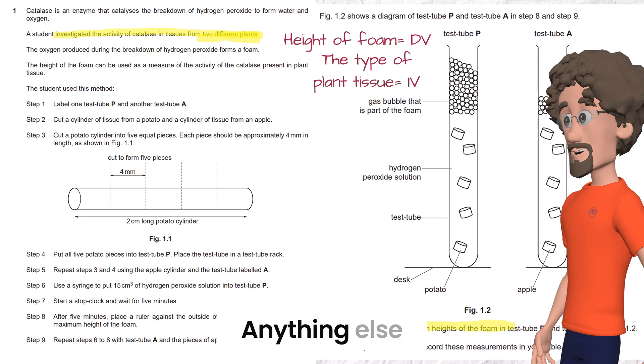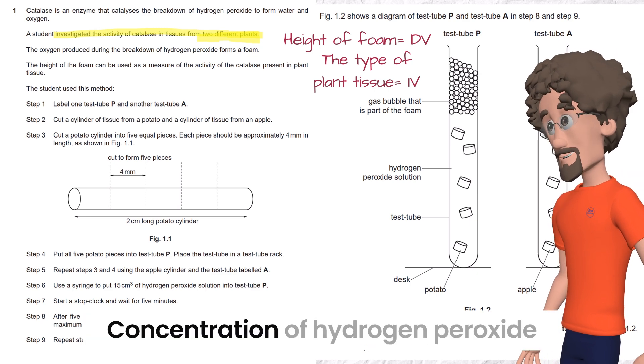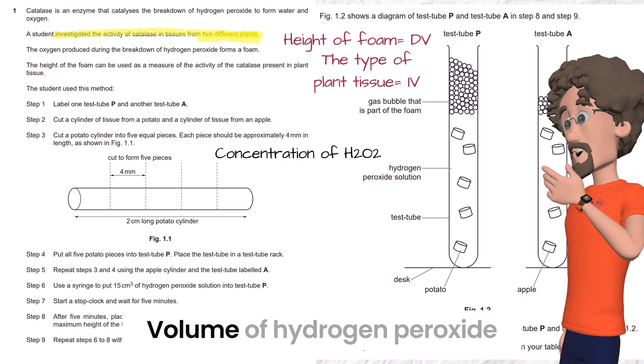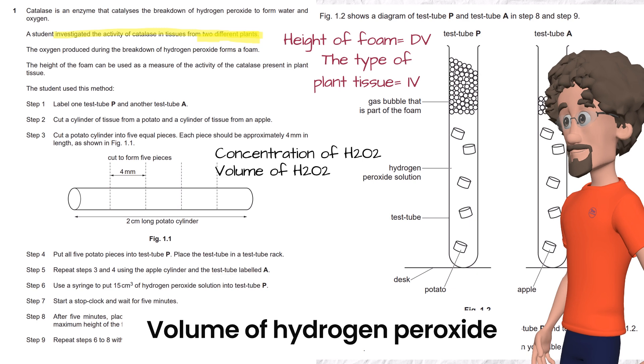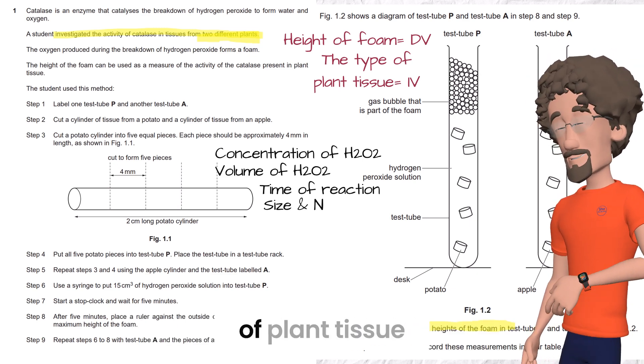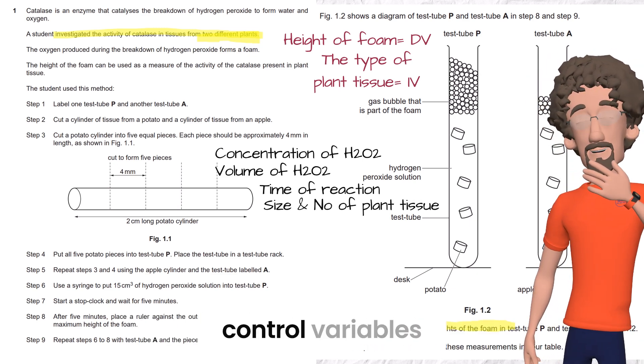What do I freeze? Anything else: concentration of hydrogen peroxide, volume of hydrogen peroxide, time of reaction, size and number of pieces of plant tissue. All of these are control variables.